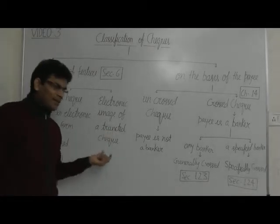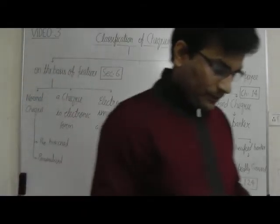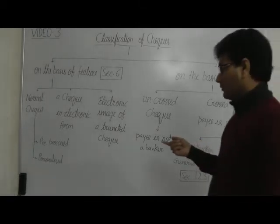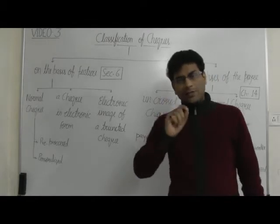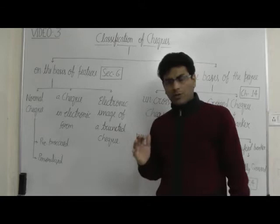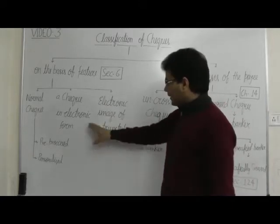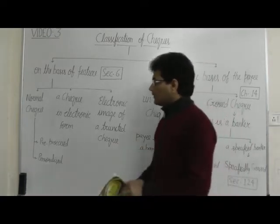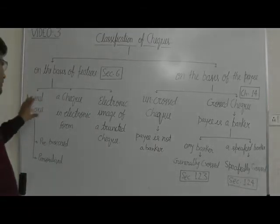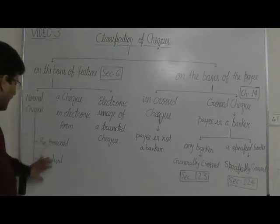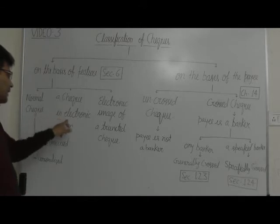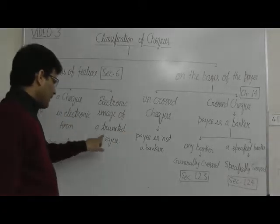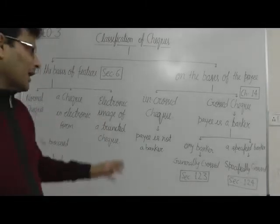What is a truncated check? When a check is cleared and the amount is paid through the check, the check is truncated — it is cancelled — and its electronic image is preserved for record. That is called a truncated check. So there are three kinds of checks on the basis of features: the normal check (which may be pre-processed or personalized), a check in electronic form (the scanned copy), and the electronic image of a truncated check, which is also treated as a check for the purposes of Section 6.